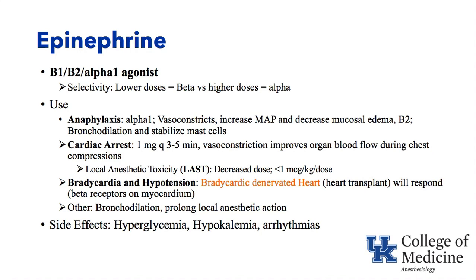Epinephrine is used for treatment of severe asthma to cause bronchodilation via its beta-2 effects, and to prolong local anesthetic action because it vasoconstricts and reduces uptake of the local anesthetic from the point of injection. Side effects of epinephrine include raised blood sugar, driving potassium into the cell, and causing arrhythmias.